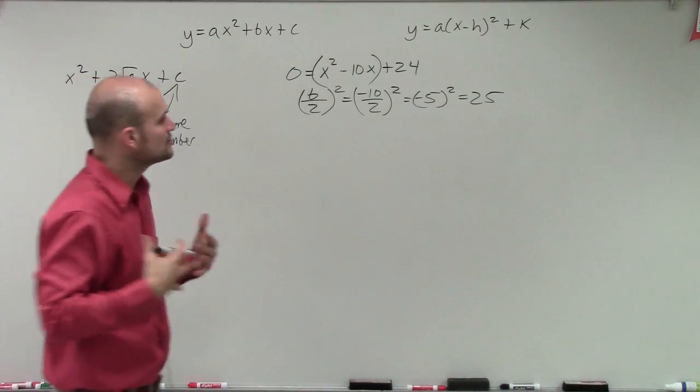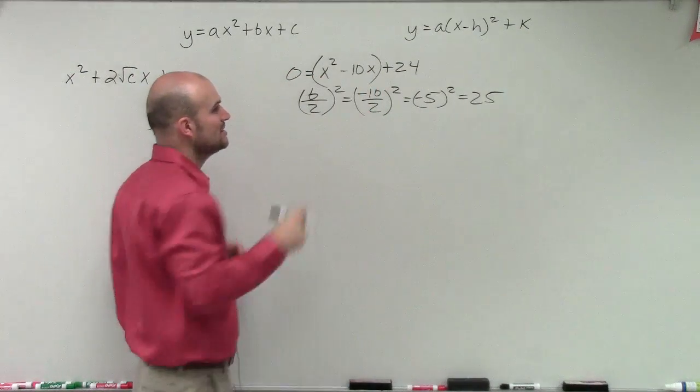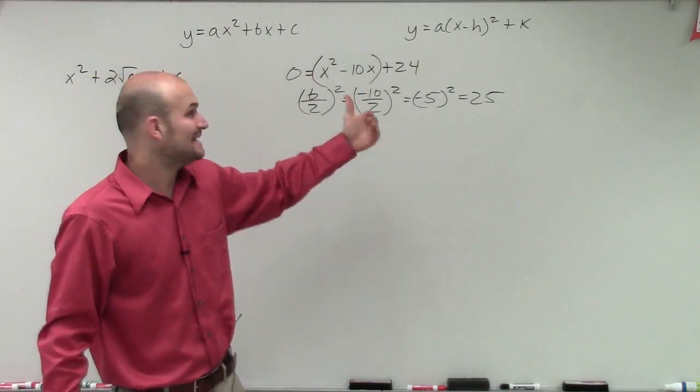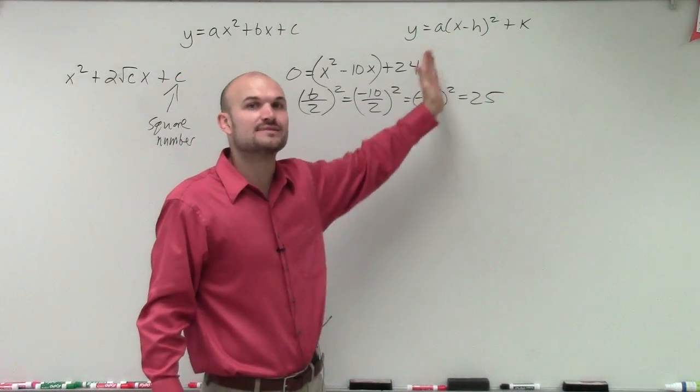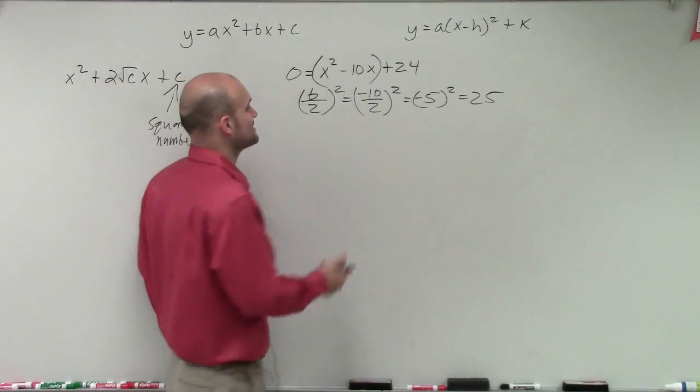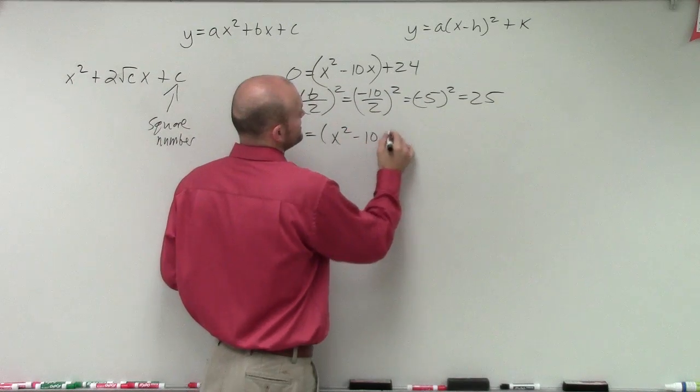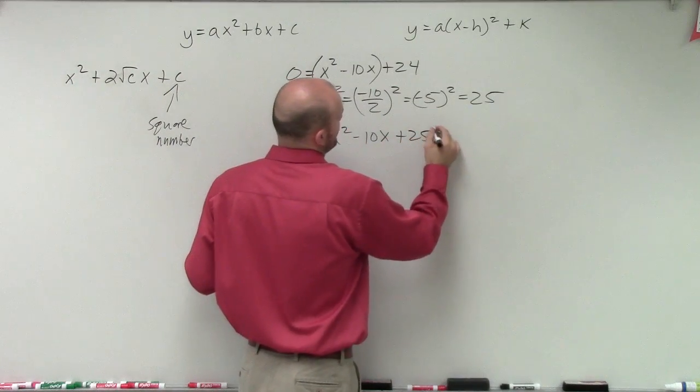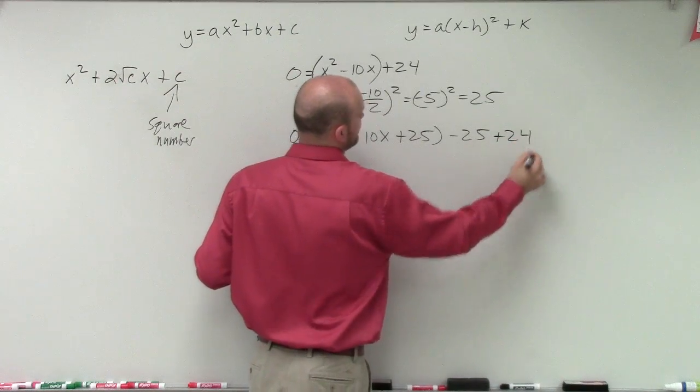All right, so now what I'm going to do is I'm going to add that 25 inside my parentheses. But since I'm adding it on the right side of the equation, I need to either add it on the left side of the equation, or I can simply just add and subtract it on the same side. And that's not going to affect my solution.